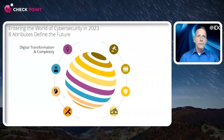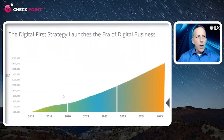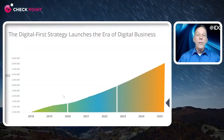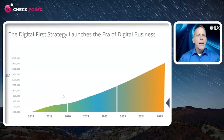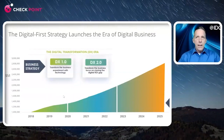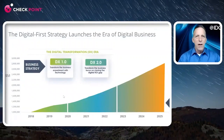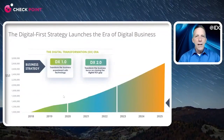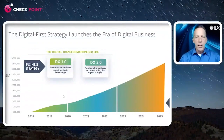The first major trend is digital transformation and complexity. I present this a lot, and I know folks sometimes roll their eyes — but in security it has a different implication. We did DX 1.0, which was transforming the business and experimenting with technology, and then DX 2.0, which focused on closing the digital ROI gap and injecting technology to improve revenue or decrease costs.